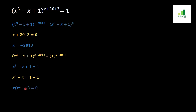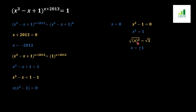We solve x(x² - 1) = 0, giving us x = 0 and x² - 1 = 0. Moving 1 to the other side gives x² = 1. Taking the square root of both sides, the root and square cancel out, giving x = ±1. So the values for x from this method are x = 0 and x = ±1.